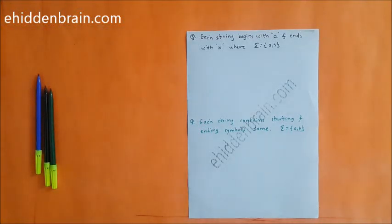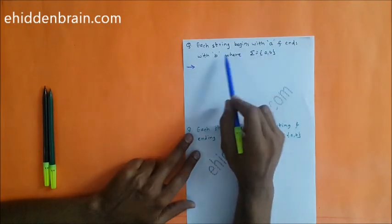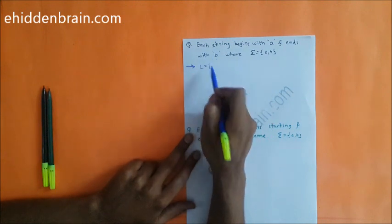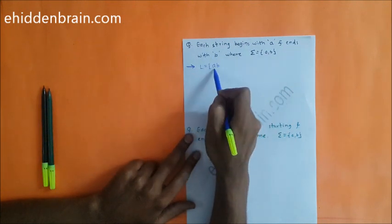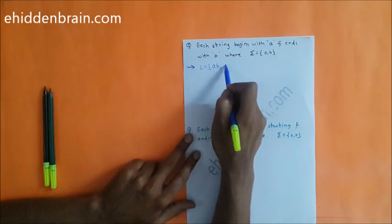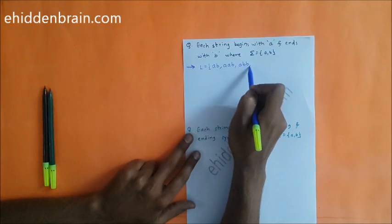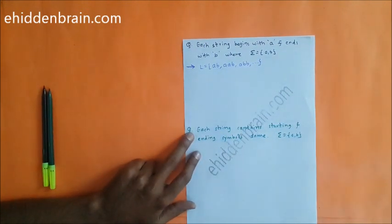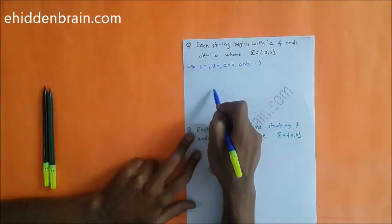Hello friends, today we'll see questions on regular expressions. The rule says that the string starts with 'a' and ends with 'b'. The minimum length string possible is 'ab', because it starts with 'a' and ends with 'b'. Next is 'aab', next 'abb', and like this — there are infinite strings possible in this language, which means a regular expression will be very easy to draw.